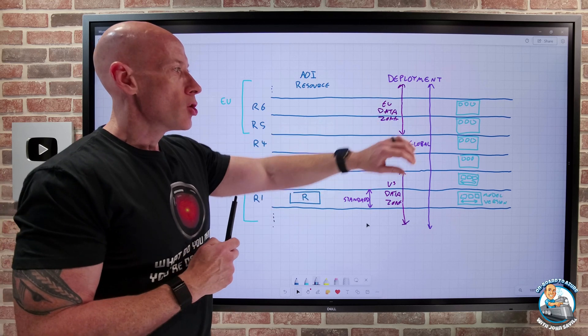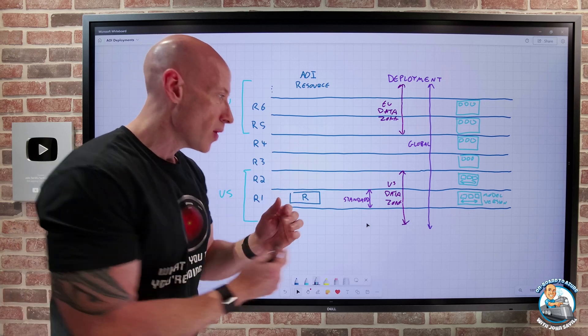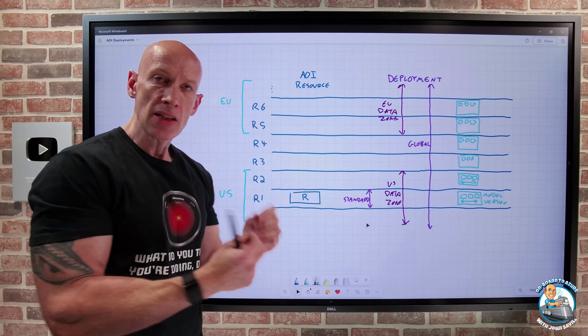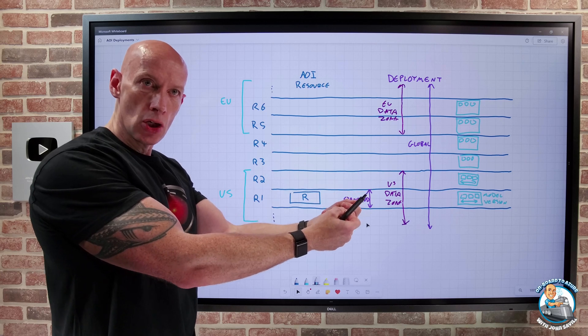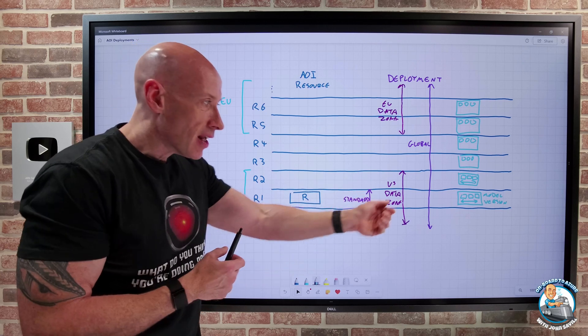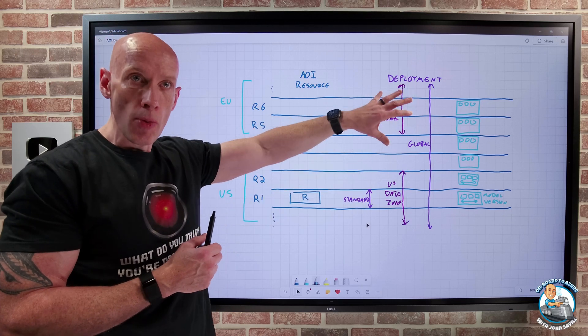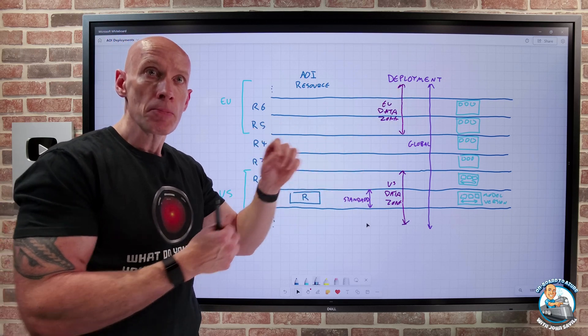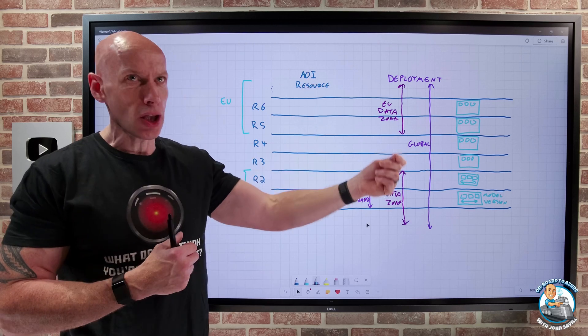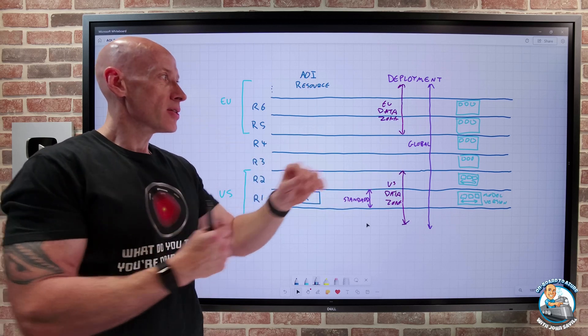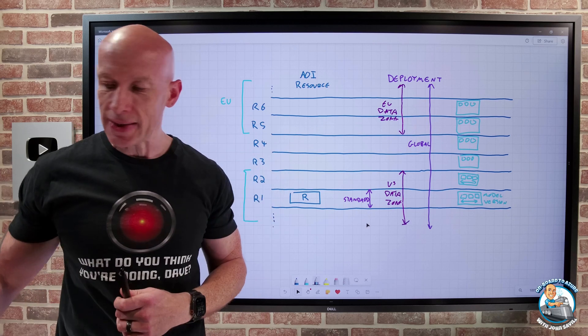And remember, using global and data zone is still attractive for PTUs because within a specific region, there's a finite capacity. So when I try to do my on-demand PTU, it could fail if there isn't available capacity in that region. So by using data zone, by using global, even for your PTUs, you've got a way greater chance of getting all of the throughput you want because, hey, that pool is that much bigger. So it's still a great capability to have there.